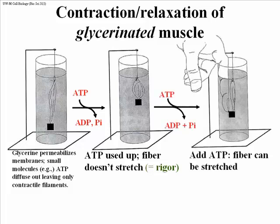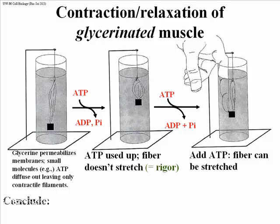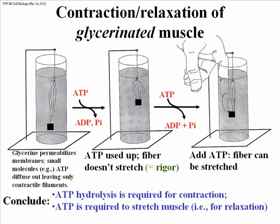If you add fresh ATP back to this cylinder, you would at first see nothing happen. But if you were to try to stretch that muscle shortly after adding the ATP, you would find that you could do it. If you waited until the ATP is consumed and the reaction reaches equilibrium, the muscle will have re-contracted and the weight will remain elevated. But as soon as you add ATP and for as long as ATP is still there, the fiber can be stretched. So obviously, you need ATP in order to stretch — i.e., to relax — a muscle. ATP hydrolysis seems to be required for contraction, but ATP is also required for relaxation. And that's the paradox.